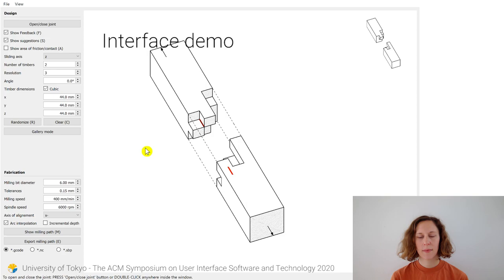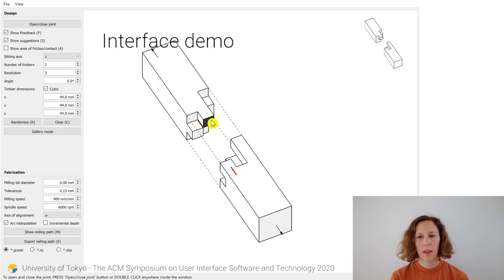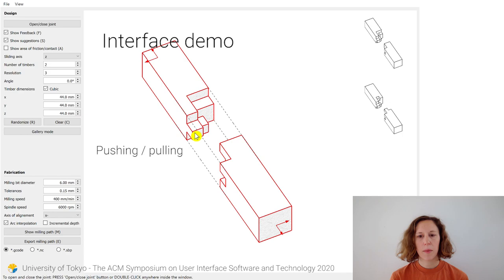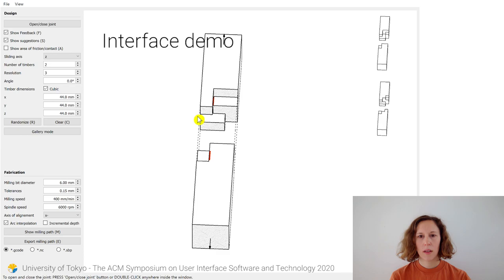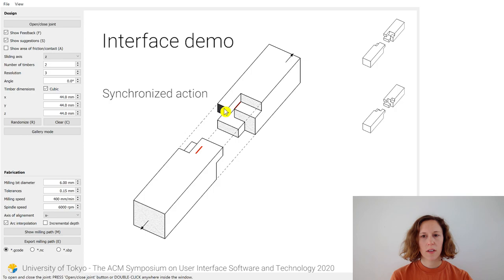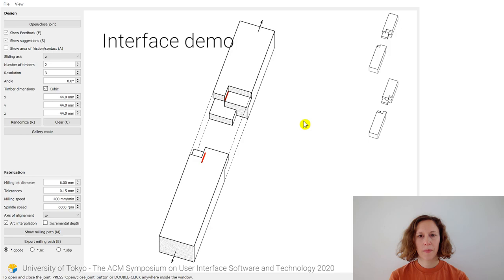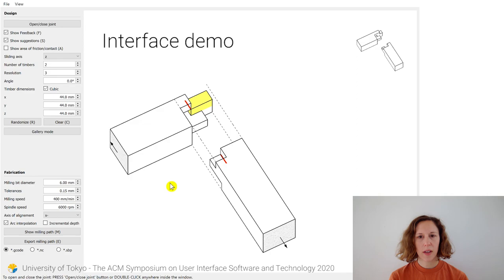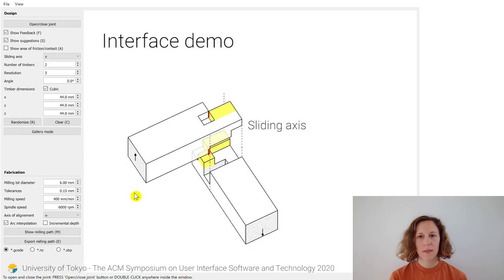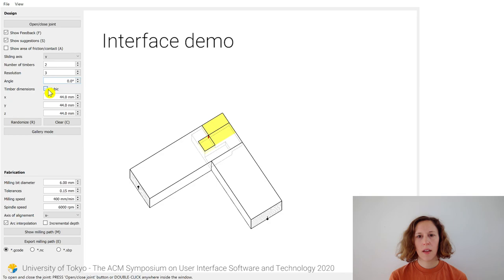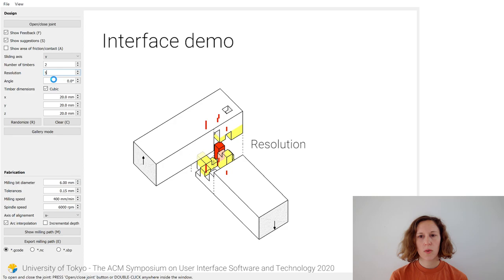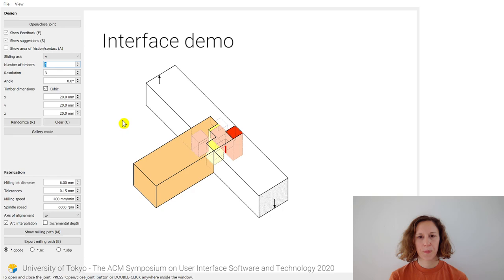Let me show a real-time demo of the proposed interface. We focus on the design of a single joint. The design space is a 3D grid of voxels, and the joint is edited by pushing and pulling on the faces. This action is synchronized — when I remove a voxel here, another one is automatically added over here. The user can change the orientation of a timber by dragging its body, change the sliding axis, the angle of intersection, the timber dimensions, the voxel resolution, the number of connecting timbers, and more.